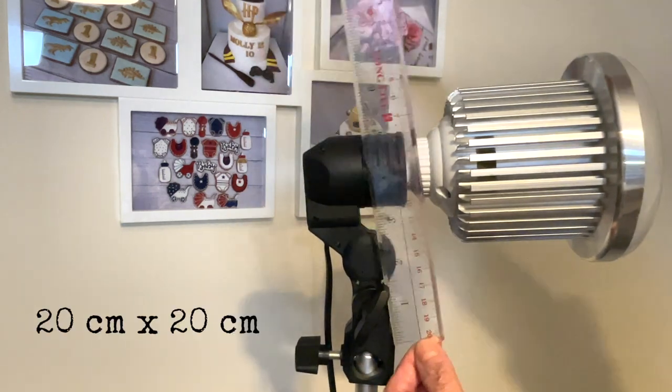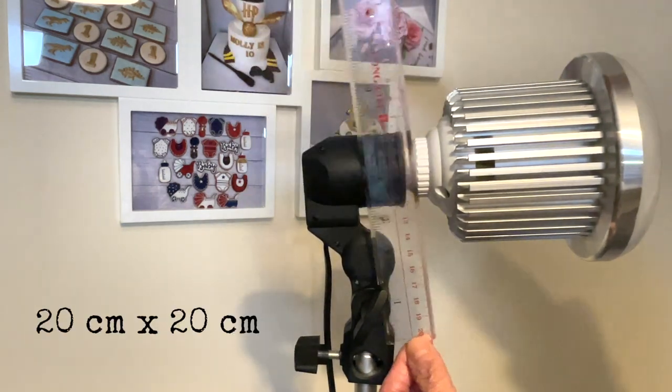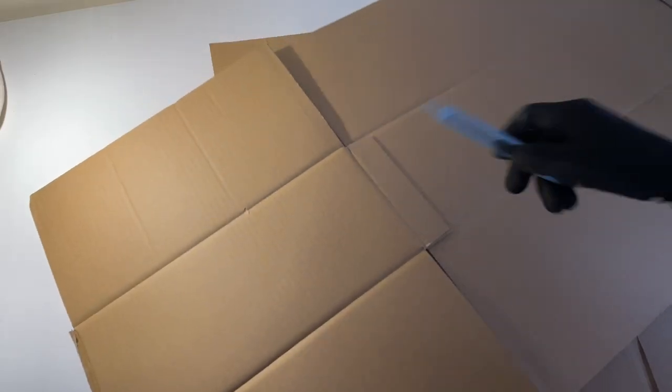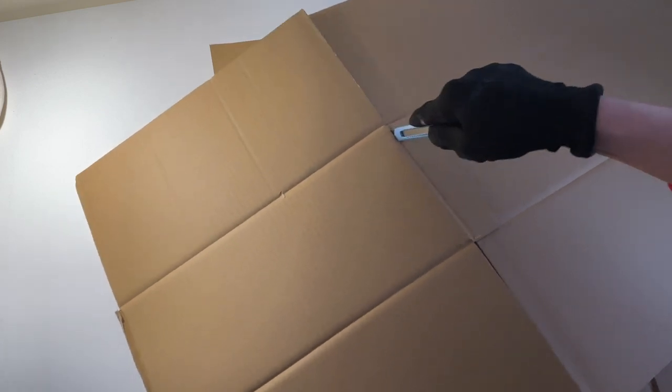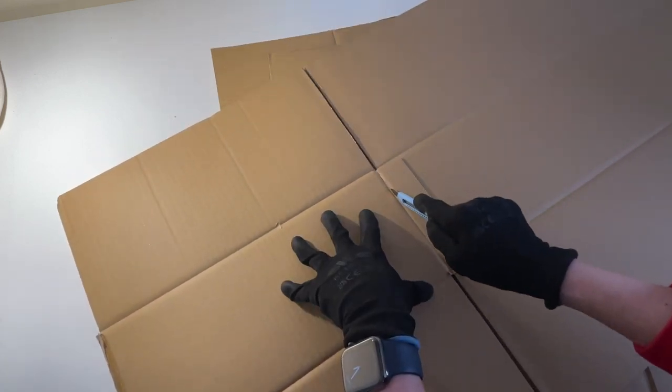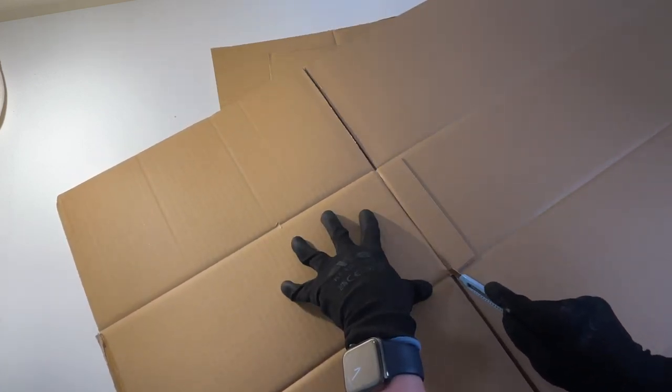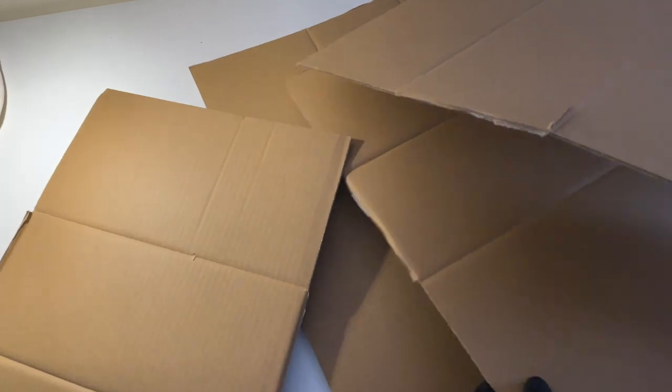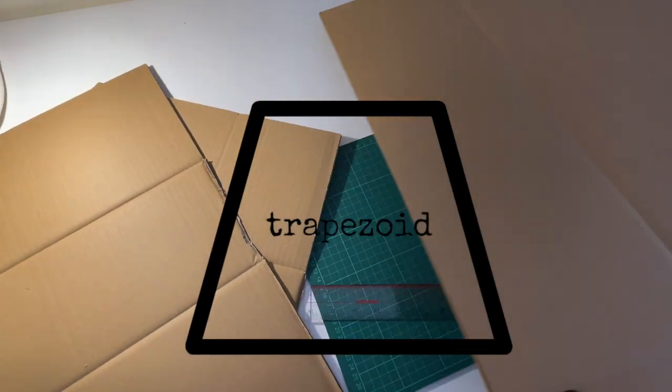Step number two: prepare the materials and the tools. The main material for this project is cardboard, so I cut it out from a box. But be careful, it is better to put a pair of gloves on to prevent any accidents from happening. Here I have four pieces of cardboard, and each piece should be big enough to create a trapezoid for the softbox, and I will show you how to do it in the next step.